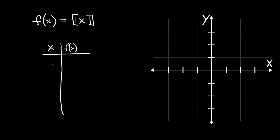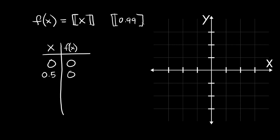Let's plug in 0 first. Since 0 is already a whole number it stays as 0, so f(0) = 0. Now let's plug in 0.5 — whatever you plug into these brackets, you just round down to the nearest whole number, so 0.5 rounds down to 0. Same with 0.99 — that also rounds down to 0.